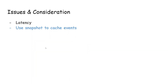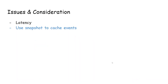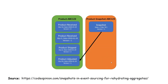Another consideration is using snapshots to cache events. If we want to query the current state, we have to replay all the events to find it. To avoid replaying every single time, we can cache the state. Here we have an example of our event store, and the latest event is shown — we can cache or take a snapshot of the current state